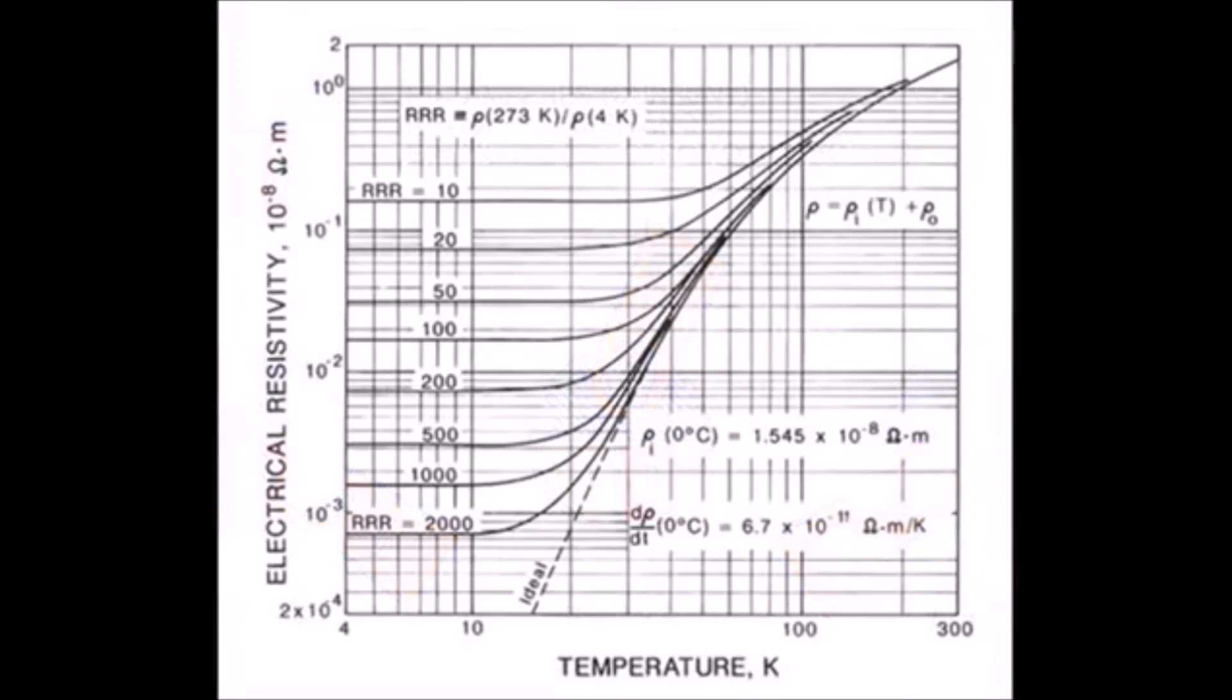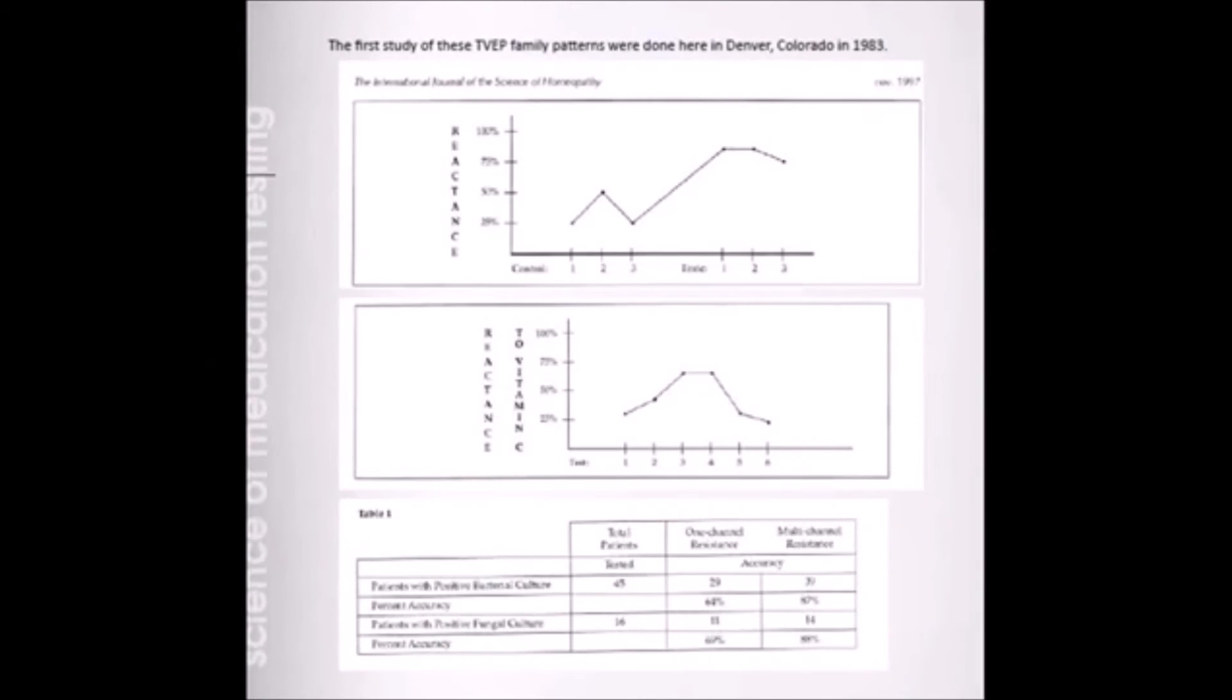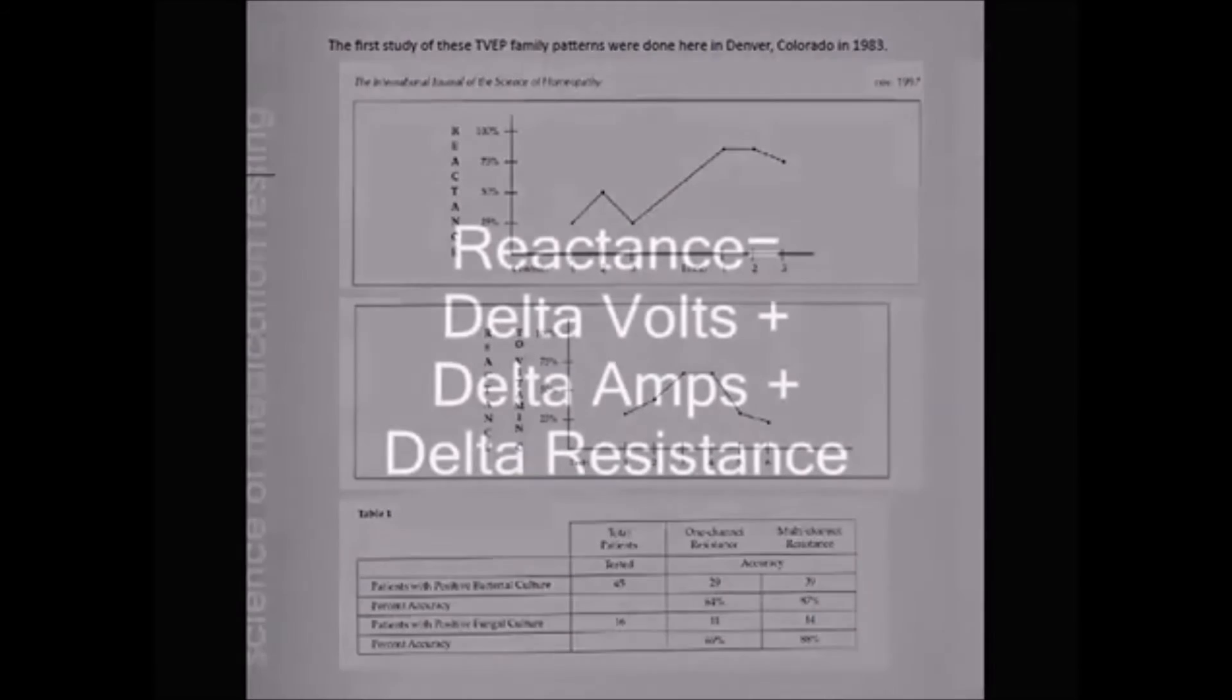As we look at this, the resistance is the flow of electricity. And the flow of electricity can be impeded by heavy metals, lack of nutrition, lack of water, lack of fatty acids, lack of minerals, and a host of other things that can impede the resistance.